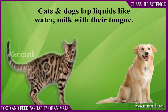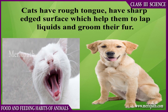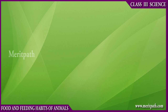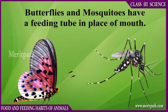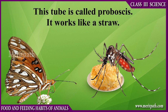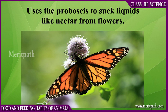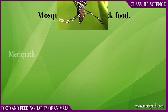Cats and dogs lap liquids like water and milk with their tongue. Cats have a rough tongue with a sharp-edged surface which helps them lap liquids. Other animals like butterflies and mosquitoes feed by sucking. They have a tube in place of a mouth called a proboscis, which works like a straw to suck liquids like nectar from flowers.